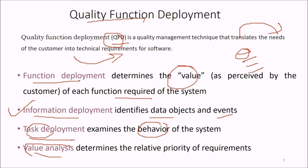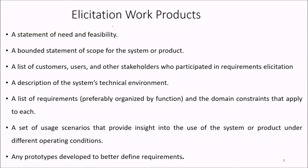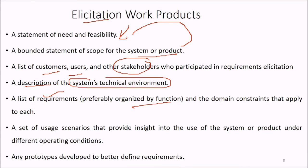Elicitation work products include: a statement of need and feasibility, a bounded statement of scope for the system or product, the list of customer users and other stakeholders who participated, description of the system's technical environment, list of requirements organized by function, set of usage scenarios that provide insight into system use under different operating conditions, and any prototypes developed to better define requirements.